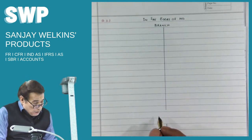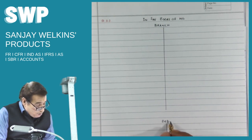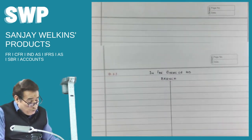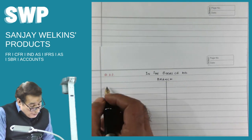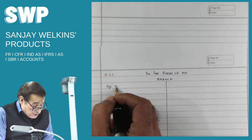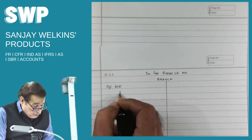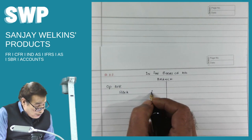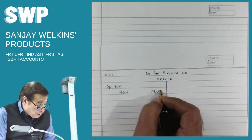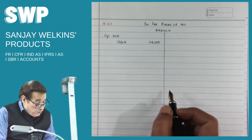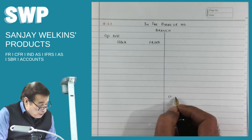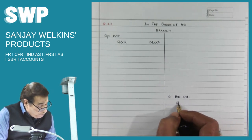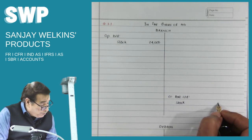After writing branch account, also write the debtors account. Now we go through the data. Opening balance of stock is written towards the debit side — 'To Balance b/d, Stock: 24,000.' Closing balance of stock is written towards the credit side — 'By Balance c/d, Stock: 18,000.'